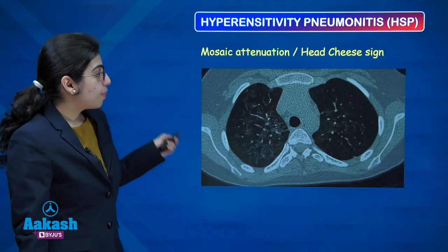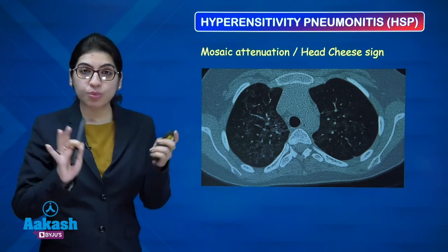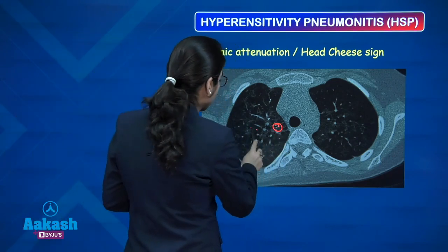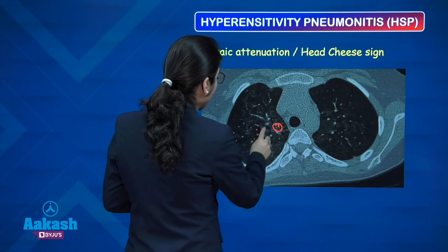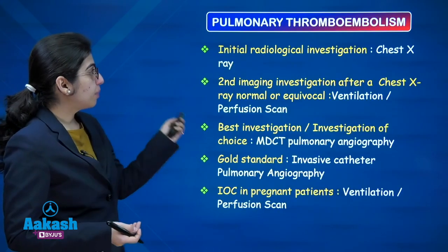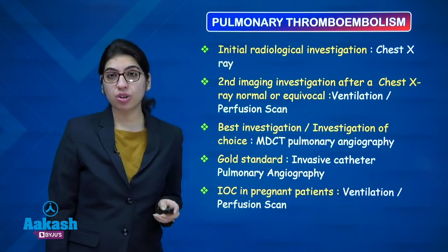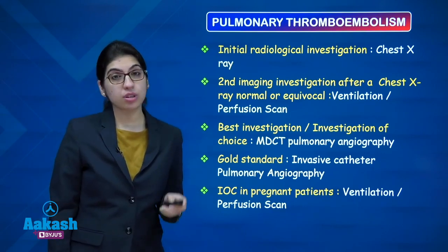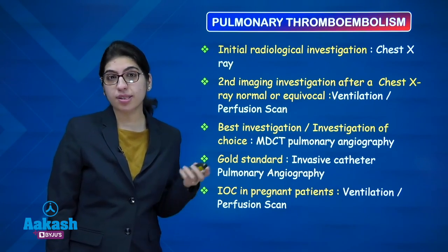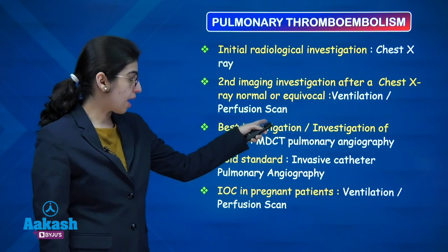Hypersensitivity pneumonitis typically has a head cheese appearance or mosaic attenuation — areas of ground glass mixed with areas of hyperlucency. For pulmonary thromboembolism, the initial radiological investigation is chest X-ray. If chest X-ray is normal or equivocal, the next investigation is a ventilation-perfusion scan.